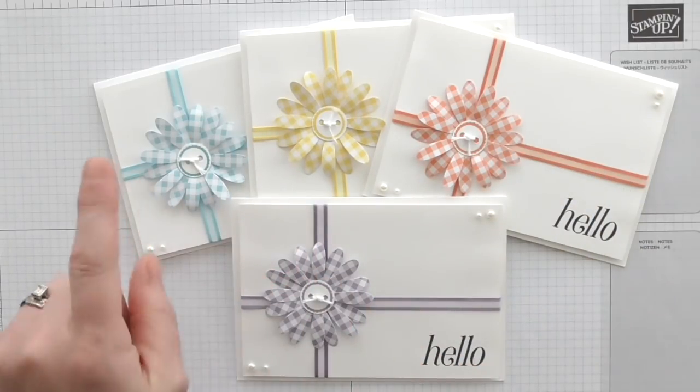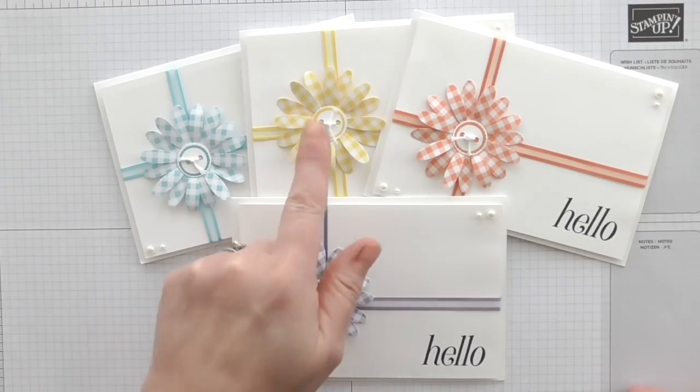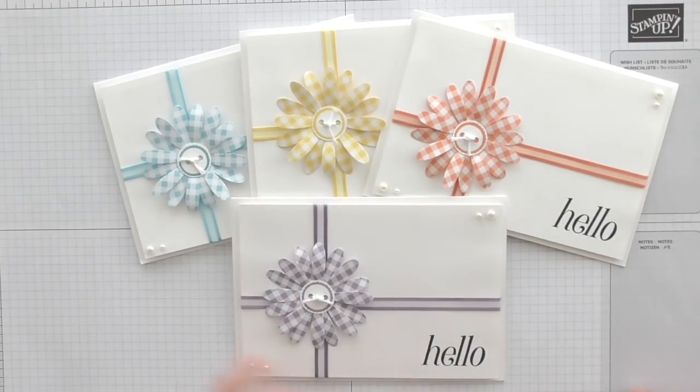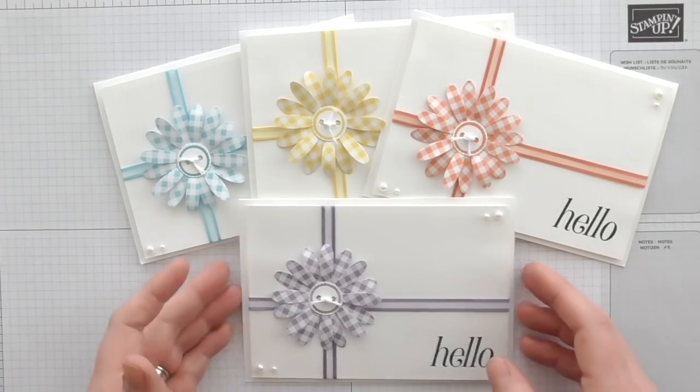So we've got Balmy Blue, we've got Daffodil Delight, Grapefruit Grove and Highland Heather which means I just have my Lemon Lime Twist one to do.